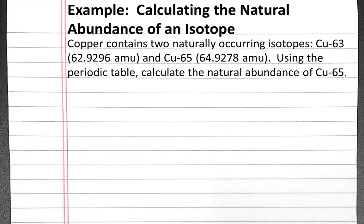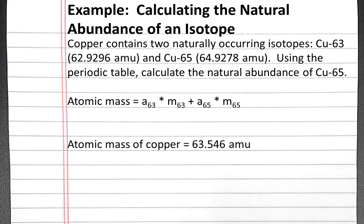The first thing we can do is write out the equation for the atomic mass of copper and determine how the information we're given in the problem fits into this equation. From the periodic table, we know the atomic mass of copper is 63.546 AMU.